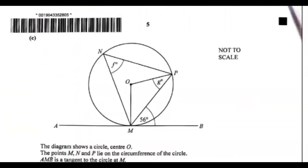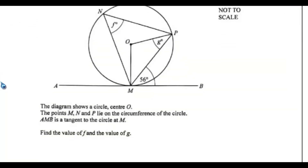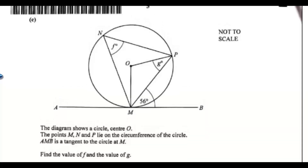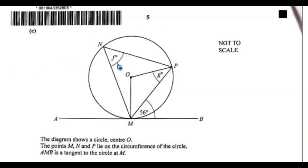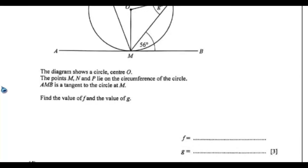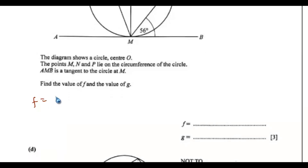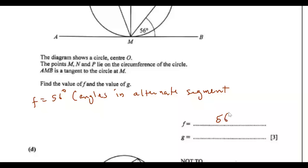Let's go to part c. The diagram shows a circle centre O. Points M, N, and P lie on the circumference. AB is a tangent to the circle at point M. Find the value of F and the value of G. Angle F equals 56 degrees by angles in alternate segments.